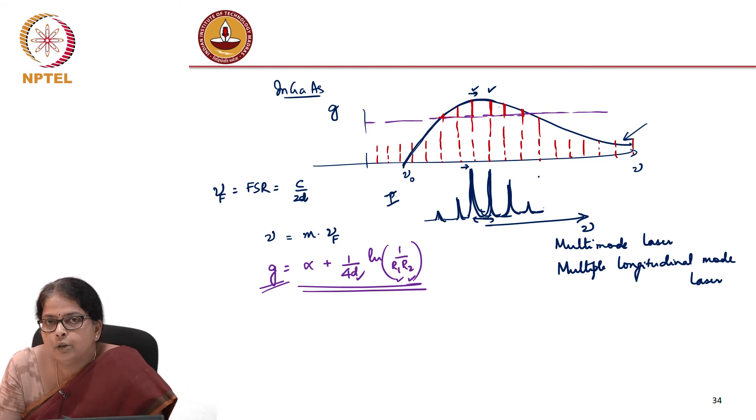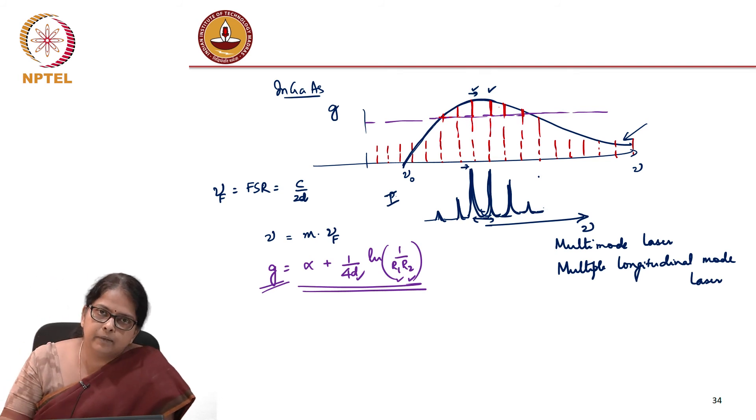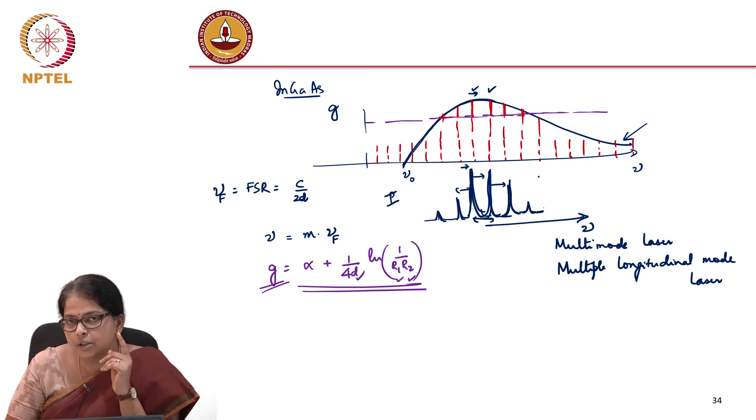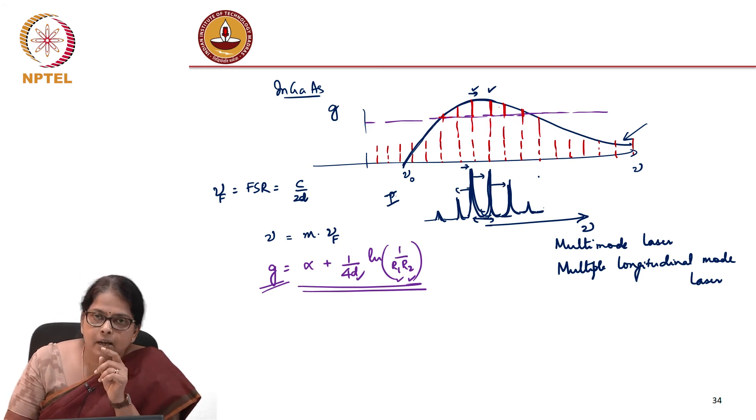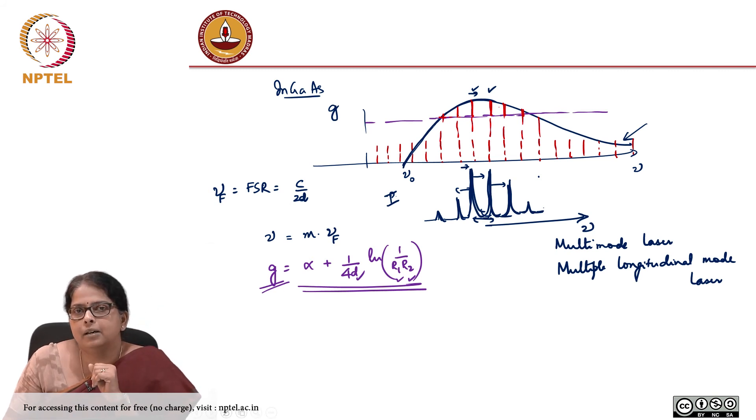But laser, we would like it to be monochromatic. You want to have the monochromatic property of the laser, but the point is that if you are not choosing your resonator correctly, you could have all these multiple longitudinal modes. And it is not a single mode laser, when I say single mode, it means single longitudinal mode laser. And ideally, we would like to have the laser to be single longitudinal mode.